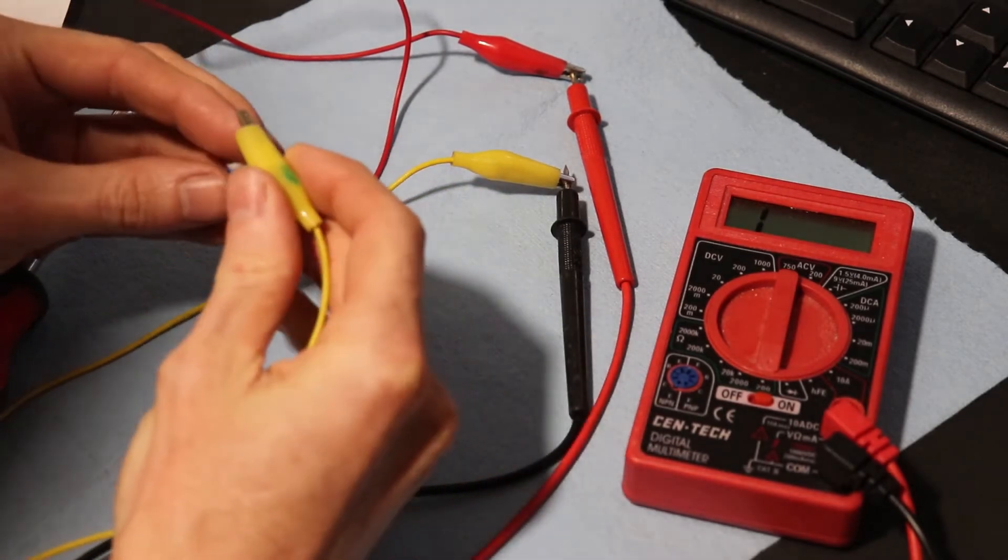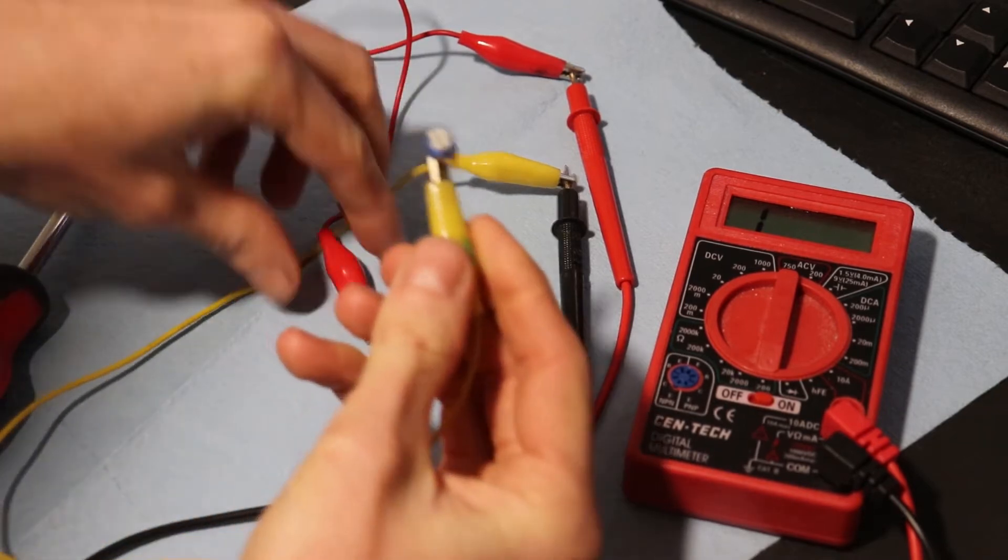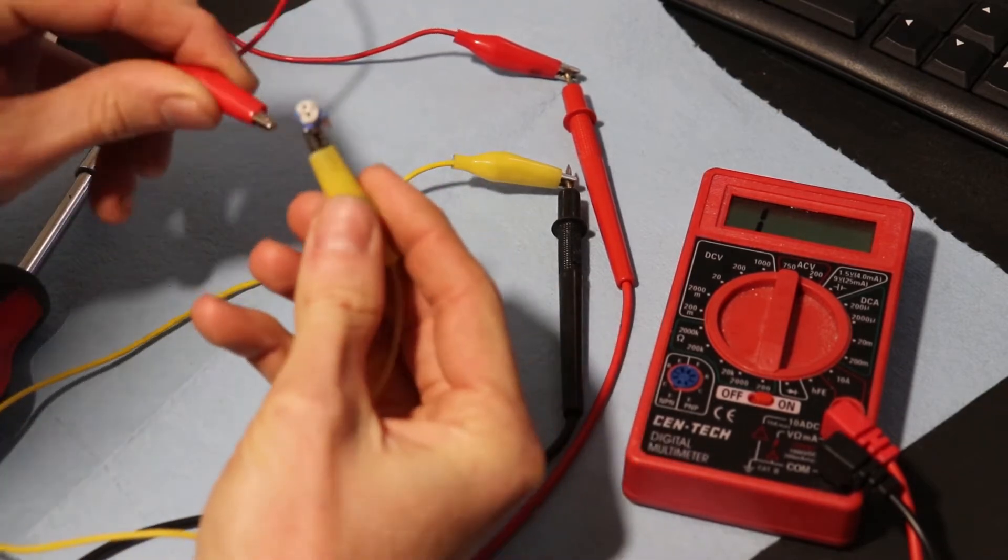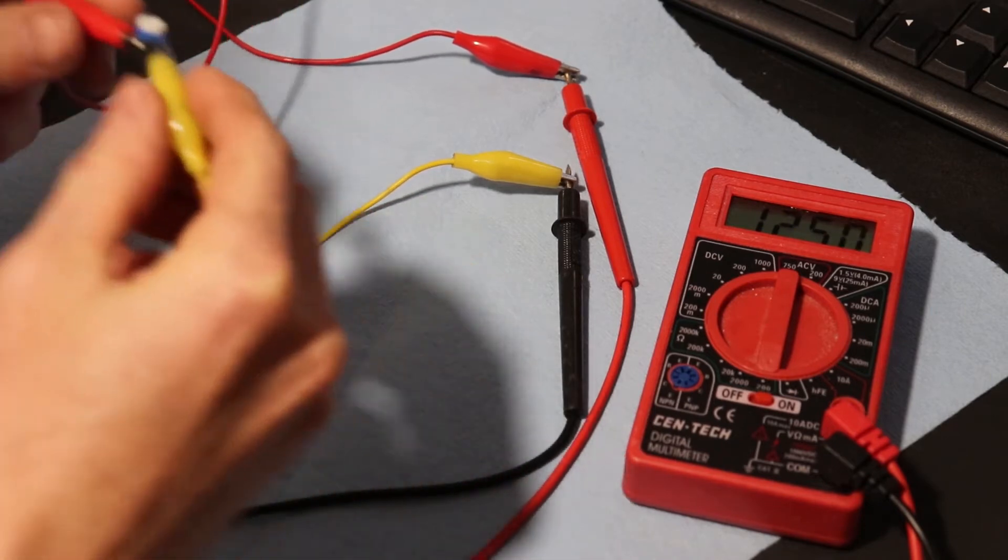We'll put the alligator clamps on terminals here. These just kind of make it so I don't have to hold the toggles on there.